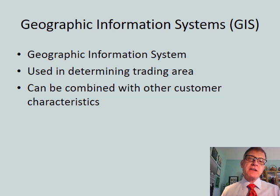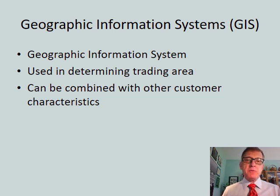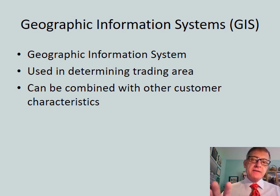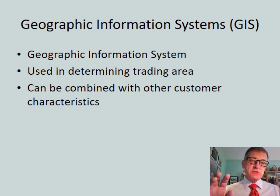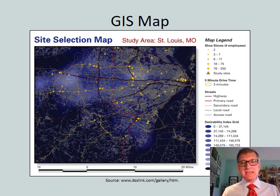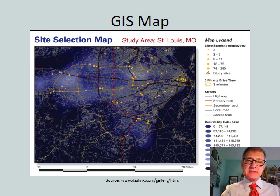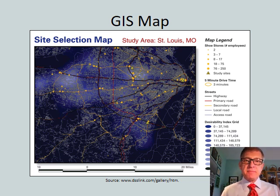Let's talk about geographic information systems, or GIS. A GIS is used to determine the trading area, and we can slice and dice it with other consumer characteristics. There's a lot of geographic and demographic data out there that you can look up using GIS software. This is an example of a St. Louis, Missouri area map — I can drill down or zoom out and see where the most people are, with heat maps showing traffic patterns and more.